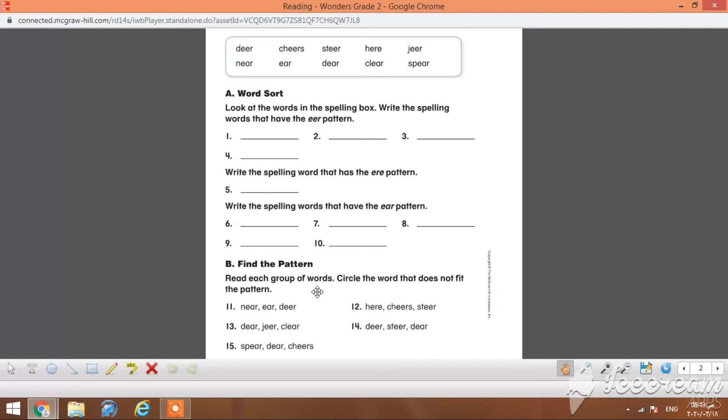By the end, you will find Part B, which is "Find the Pattern." Read each group of words and circle the word that does not fit the pattern. Number 11: near, ear, ear, deer. Of course, deer is with a different pattern here. Number 12: here, cheers, steer. Of course, double-E-R, double-E-R pattern. Ear is different from here, which is E-R-E pattern.